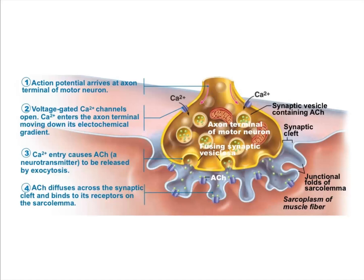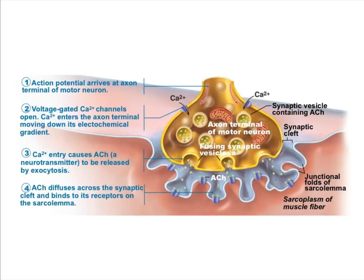So to recap: action potential, calcium flows in, vesicles open, acetylcholine enters the space between the neuron and the muscle, and acetylcholine binds its receptor. We classify these channels as ligand-gated ion channels — acetylcholine is the ligand, and the ion we're talking about is sodium.